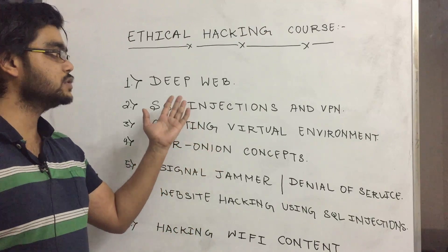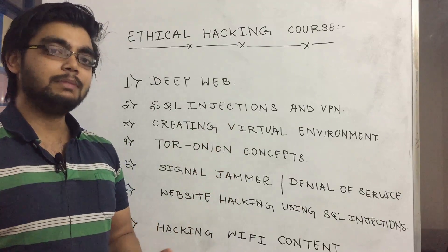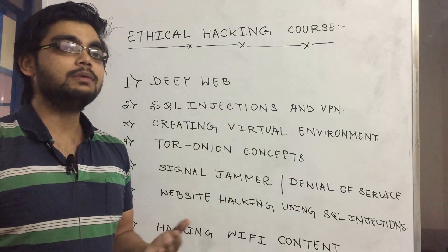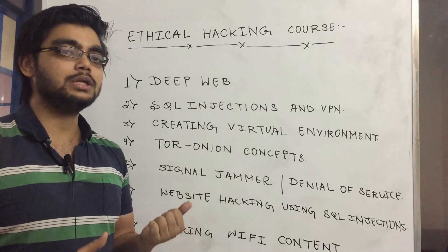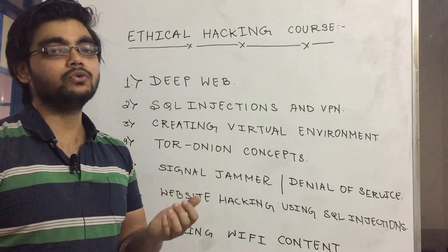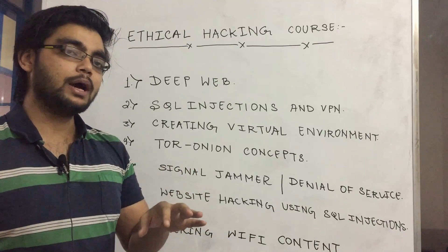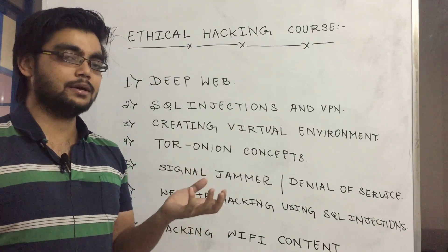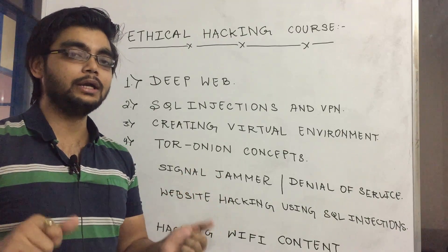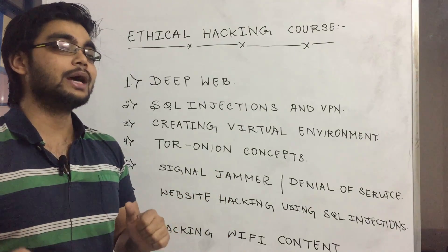The first topic we have is Deep Web. You may have heard of Dark Web or Deep Web. Deep Web means the websites or links which you cannot access. If you are trying to access a particular website, that will be indexed by Chrome and you will be able to access it. But around 90% of the content on the internet is not indexed, so you will not be able to access those websites.